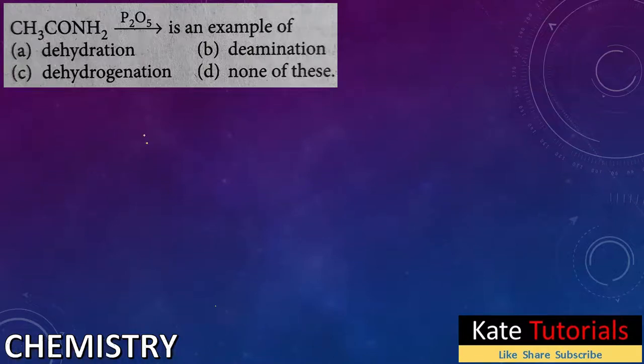Hello friends, welcome to this video. So here they have given the reaction that is CH3CONH2, right, acetamide. It is an amide group, right, CONH2. To that they are adding P2O5, right, and is an example of - they have asked about what is this P2O5.